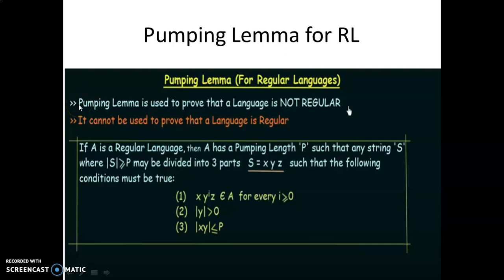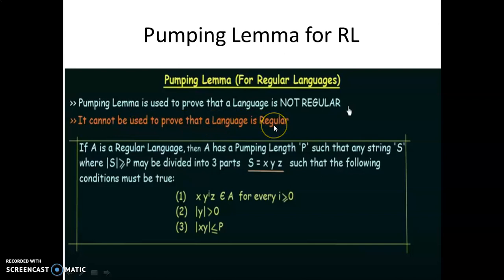The Pumping Lemma is used to prove that a language is not a regular language. But we cannot use the Pumping Lemma theorem to prove that a language is regular. If we want to prove the language is regular, we can simply draw a finite state automata machine or we can write a regular expression. If we are unable to draw a finite state machine and we are unable to write a regular expression, then we can say the language is non-regular. But how we can prove that the language is non-regular? We use the Pumping Lemma. Hence, the Pumping Lemma is used to prove that a language is non-regular.